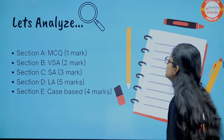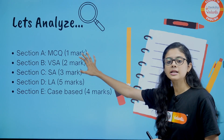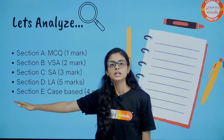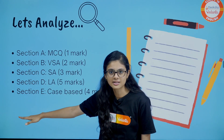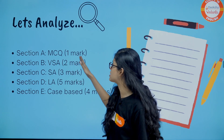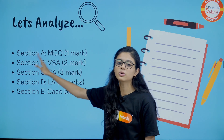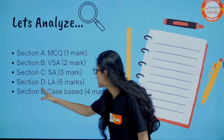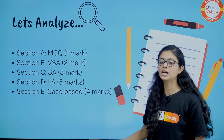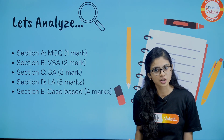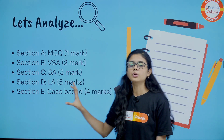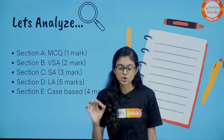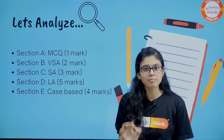So let's start today's session. Analyzing your question paper — you know your question paper consists of five sections. Section A has one-mark questions, B has two-mark, C has three-mark, D has five-mark, and E has four-mark questions. Let's break it down and analyze one by one.